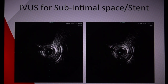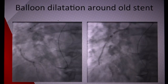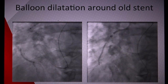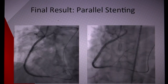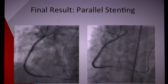We performed IVUS to look at our stent position and confirm that we were in the subintimal space. IVUS confirmed the stent was in place and we were indeed in the subintimal space. We then proceeded to do balloon dilatation around the old stent — the previous stent is still in place but we are essentially dilating around it in the subintimal space, back into true lumen distally and proximally. We then stented the entire vessel from distal in the subintimal space to the proximal true lumen around the previous RCA stent, with a very good final result.